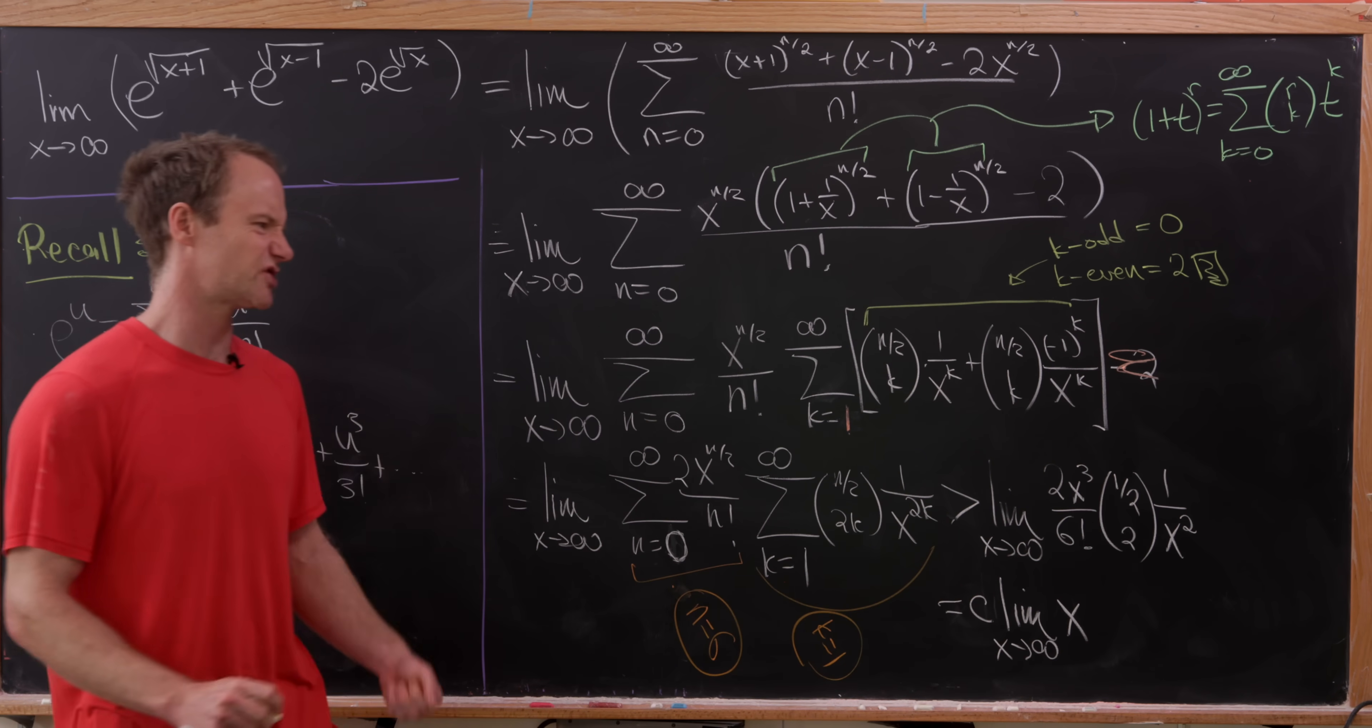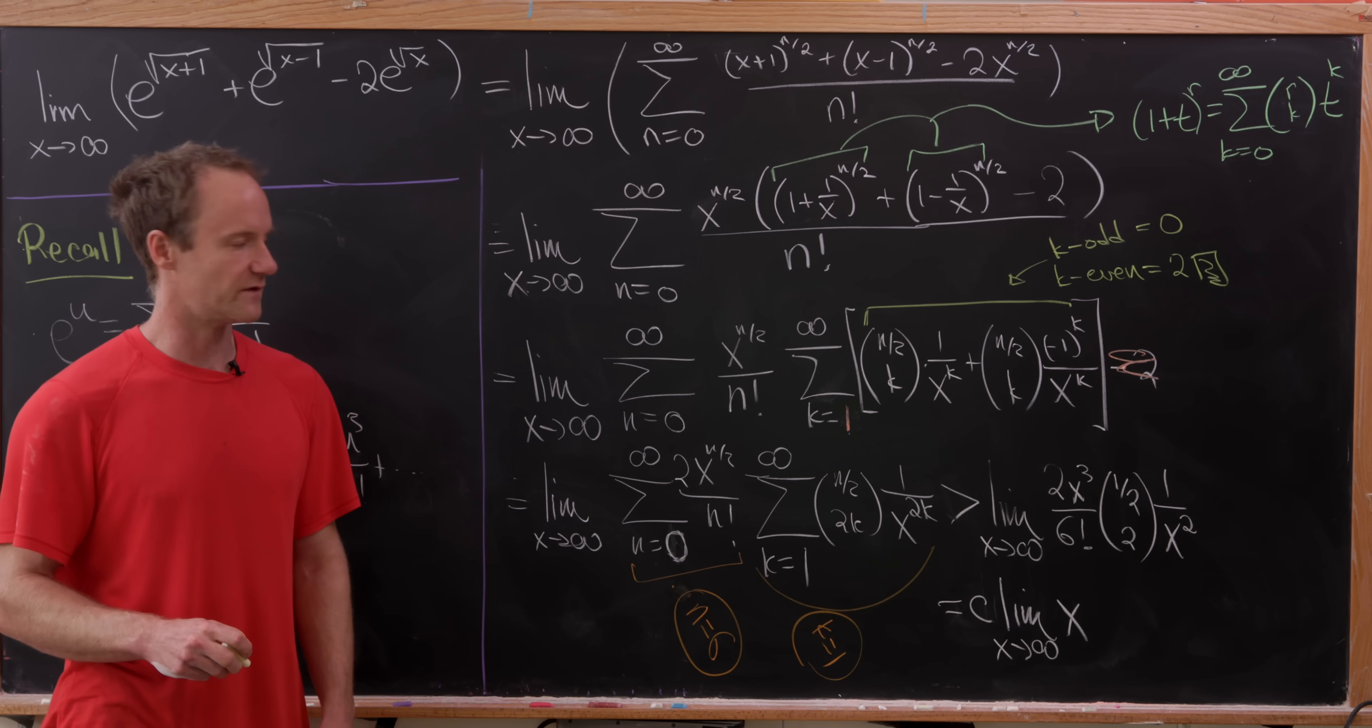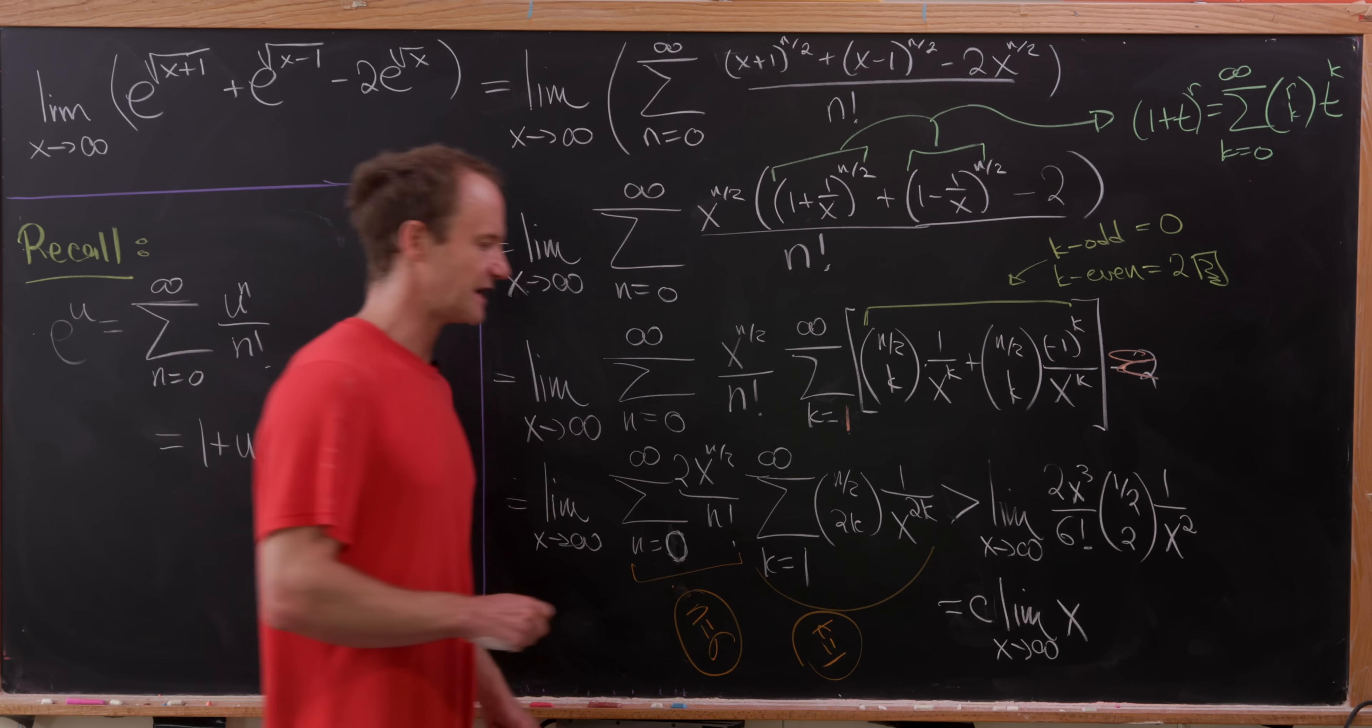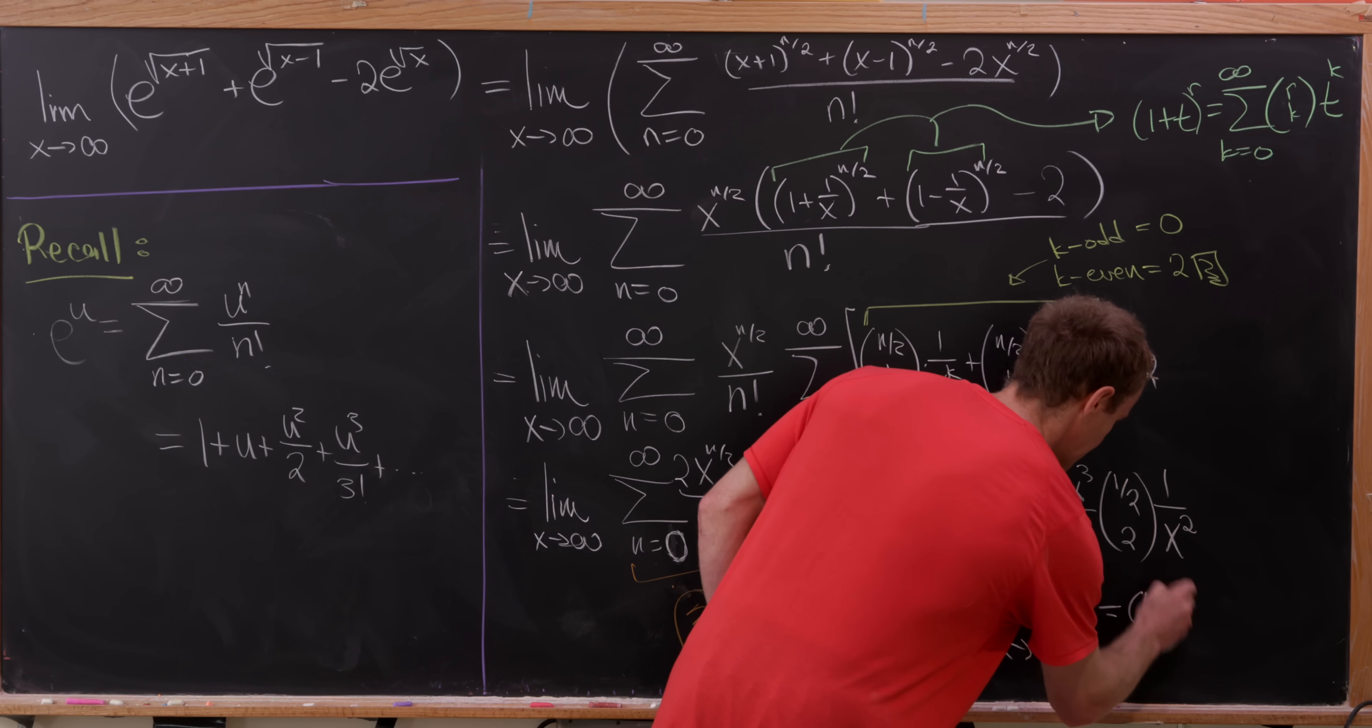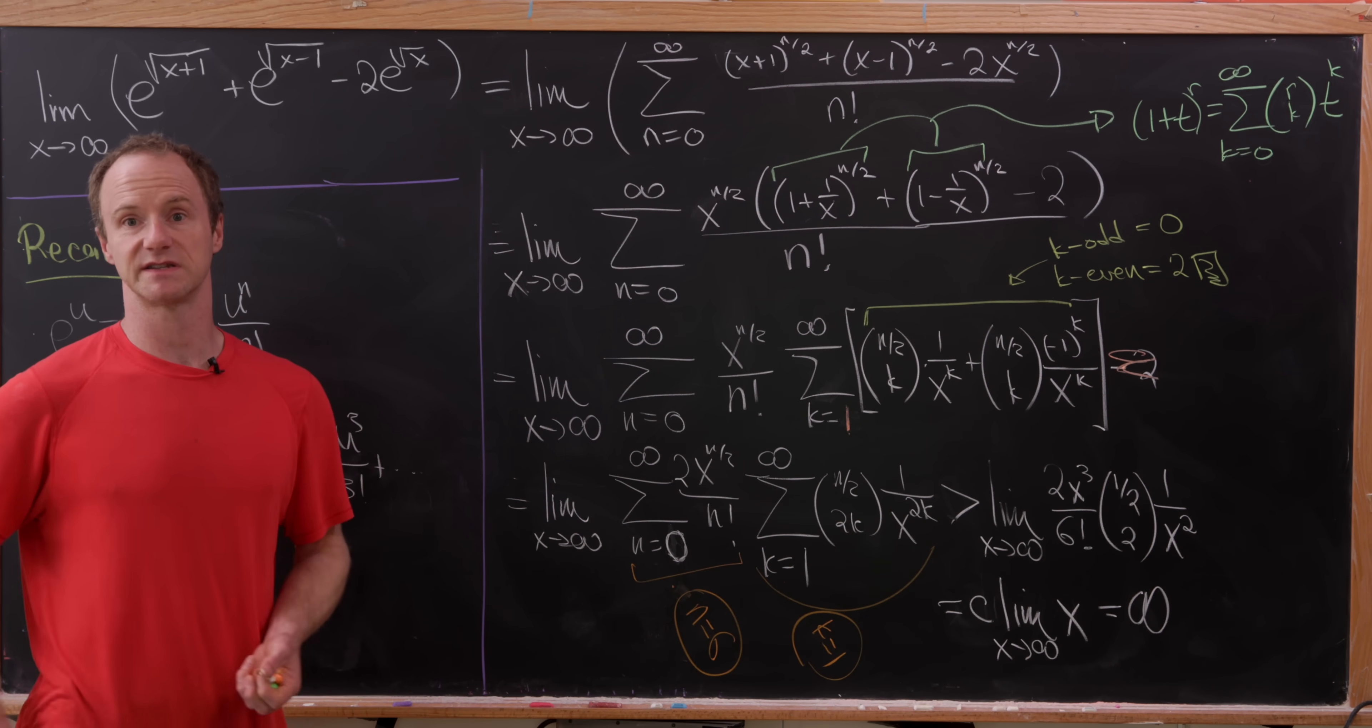Well, it's just that 2 over 6 factorial and then the binomial coefficient. But the limit as x goes to infinity of x is simply infinity. So in the end, we have an infinite limit. And that's a good place to stop.